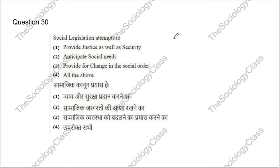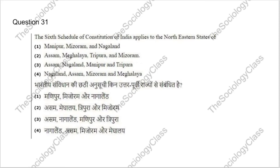Question 30: Social legislation attempts to what? Options: provide justice as well as security, anticipate social needs, provide for change in the social order, or all of the above. The correct answer is A — provide social justice as well as security.